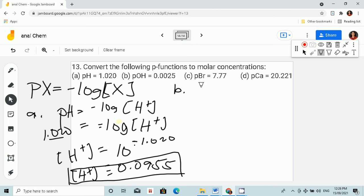Now let's do the same to letter B. We have pOH, hydroxide ion, is equal to 0.0025. So pOH is equal to negative log of OH. We have 0.0025, and this is equal to negative log OH minus.